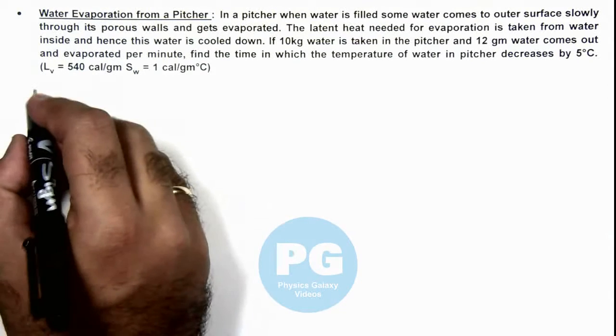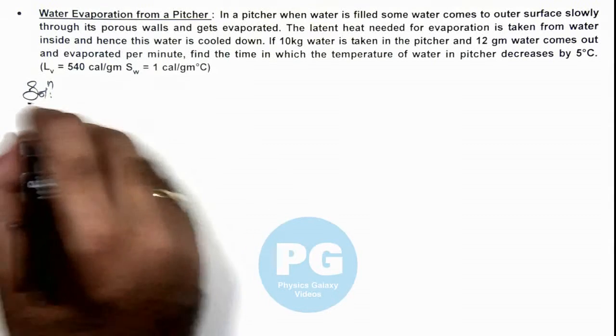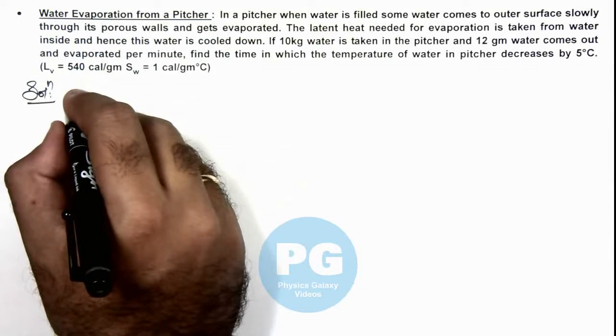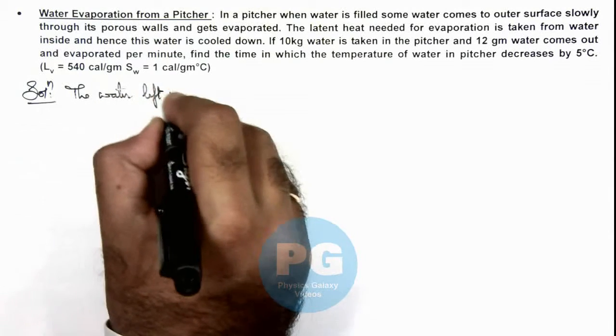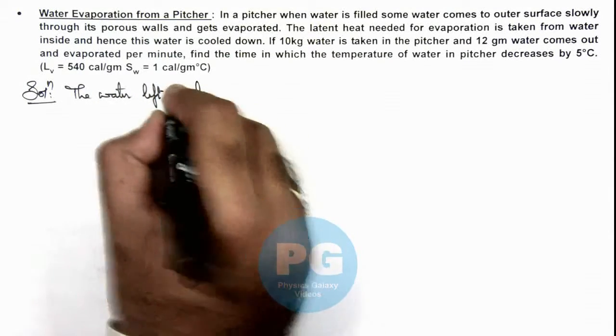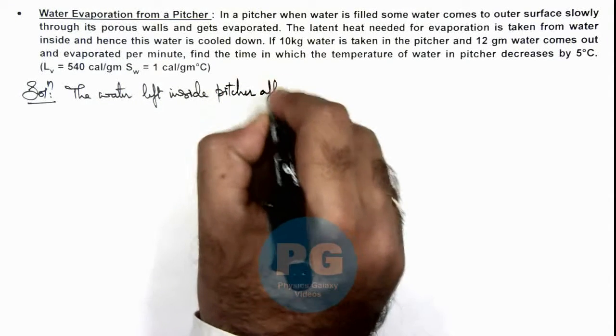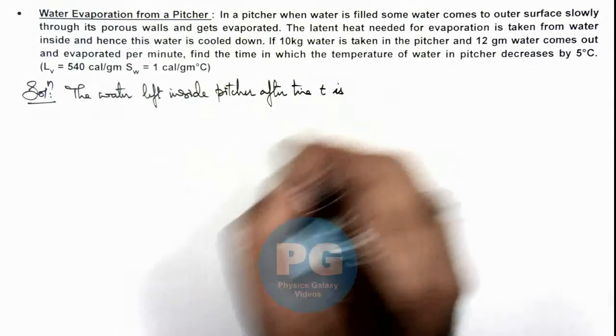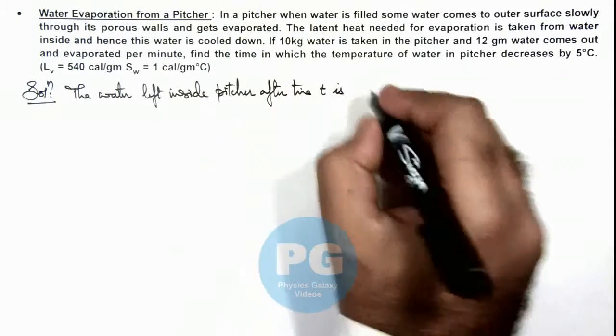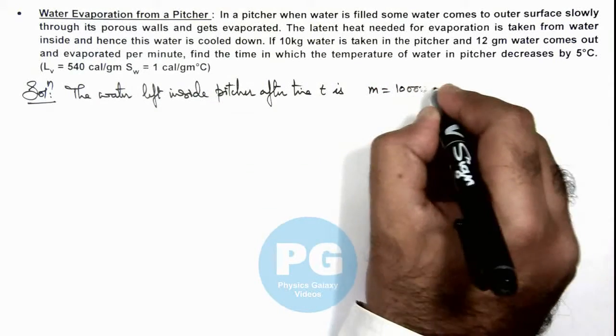So here we can write in solution, if we calculate the water left inside pitcher after time t is, here initially it was 10 kg so mass we can write as m = 10,000 grams minus 12t.